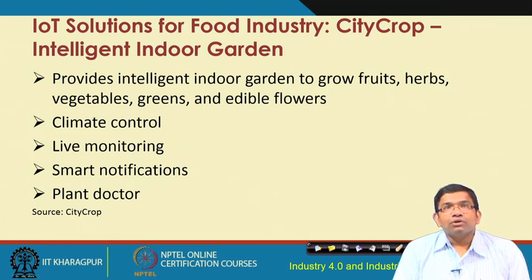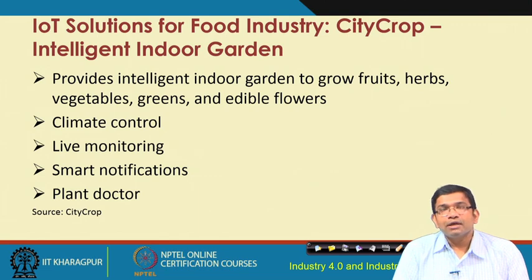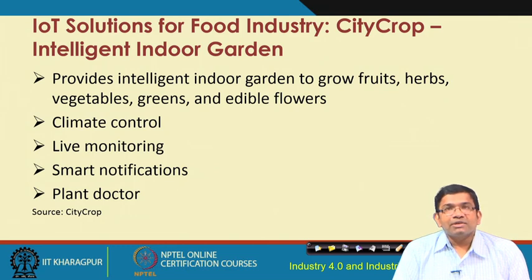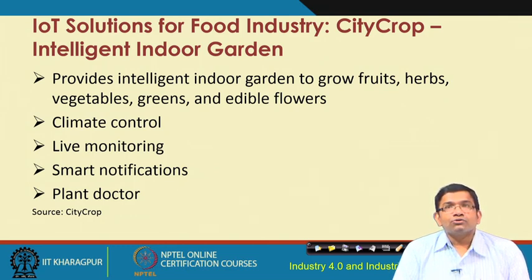City Corp is an intelligent indoor garden that provides a platform to grow fruits, herbs, vegetables, greens, and edible flowers. It features automated climate control, automated livestock monitoring, smart notifications sent to concerned stakeholders and plan doctors, and automated notifications to relevant parties.